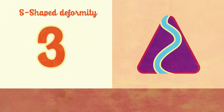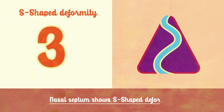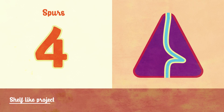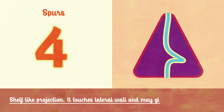Type 3: S-shape deformity — the nasal septum shows an S-shape deformity, which results in bilateral nasal obstruction. Type 4: Spurs — a shelf-like projection that touches the lateral wall and may give rise to headaches.